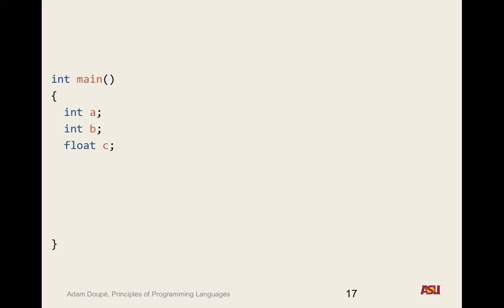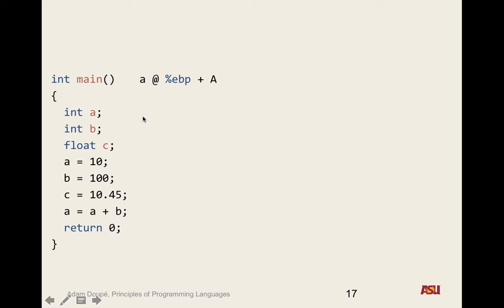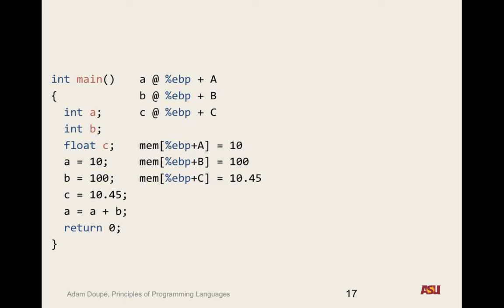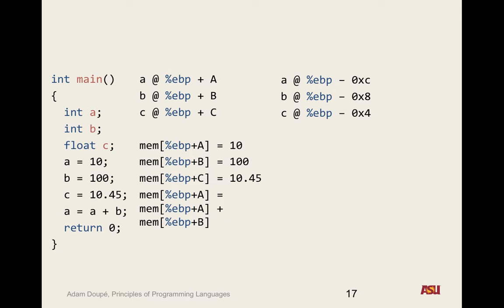We had a program with three local variables A, B, and C. We set A, B, and C to values, added A to B stored in A, and returned. The compiler gives each local variable an offset from the base pointer — so A is at offset A, B at offset B, C at offset C. In pseudocode, the memory address at EBP plus A equals 10, EBP plus B equals 100, EBP plus C is 10.45. Looking at compiler-generated x86 code on CentOS 6.7: A is at offset negative 12, B at negative 8, and C at negative 4.